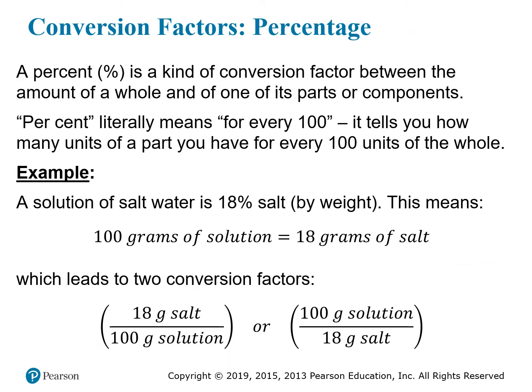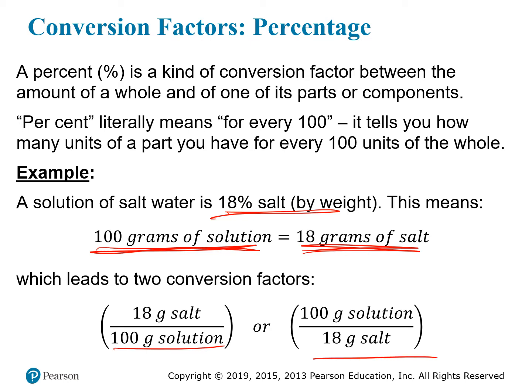We talked about percentages in the first chapter when we were going over basic math skills. But in fact, a percentage can also be seen as a conversion factor — it tells you how to relate a part to a whole. For example, if a solution of salt water is 18% salt by weight, that means that if you take 100 grams of that solution, 18 grams of that will be salt. From this relationship, you can develop two conversion factors: 18 grams of salt per 100 grams of solution, or the reciprocal, 100 grams of solution per 18 grams of salt.